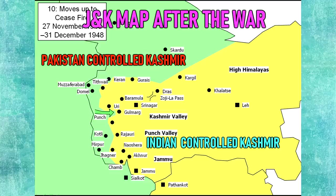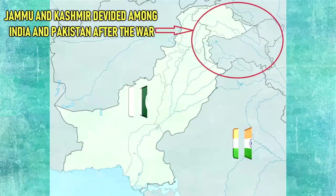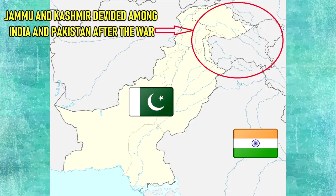India was able to successfully defend about two-thirds of Kashmir, including Kashmir Valley, Jammu, and Ladakh. The inconclusive result of the war still affects the geopolitics of both countries. The UN ceasefire line of 1949 later became the Line of Control after the Simla Agreement of 1972. Pakistan controls roughly a third of Kashmir whereas India controls the rest.